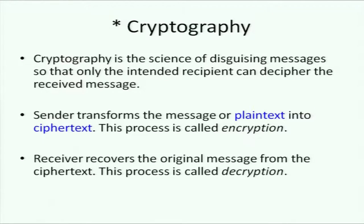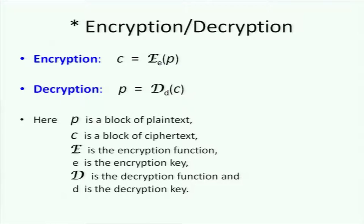Cryptography is the science of disguising messages so that only the intended recipient can decipher the received message. The sender transforms the message, or plaintext, into ciphertext — a process referred to as encryption. The reverse process of converting ciphertext back to plaintext is called decryption. Mathematically, you represent it as a function: the encryption function operates on the plaintext with the encryption key E, giving you ciphertext C. On the receiver side, you apply a decryption function with the decryption key D to get back the original plaintext.